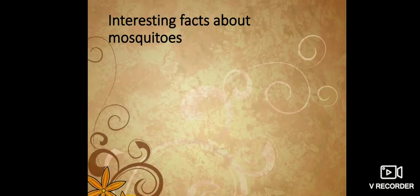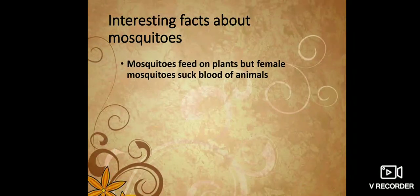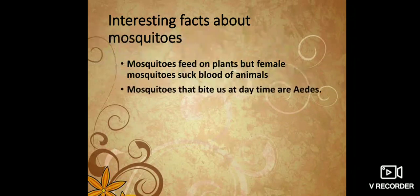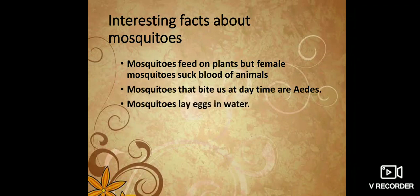Now let's see some interesting facts about mosquitoes. Mosquitoes feed on plants, but female mosquitoes suck the blood of animals. Only the female mosquitoes suck blood; other mosquitoes feed on the nectar of plants. Mosquitoes that bite us during daytime are Aedes, and we all know mosquitoes lay eggs in water.